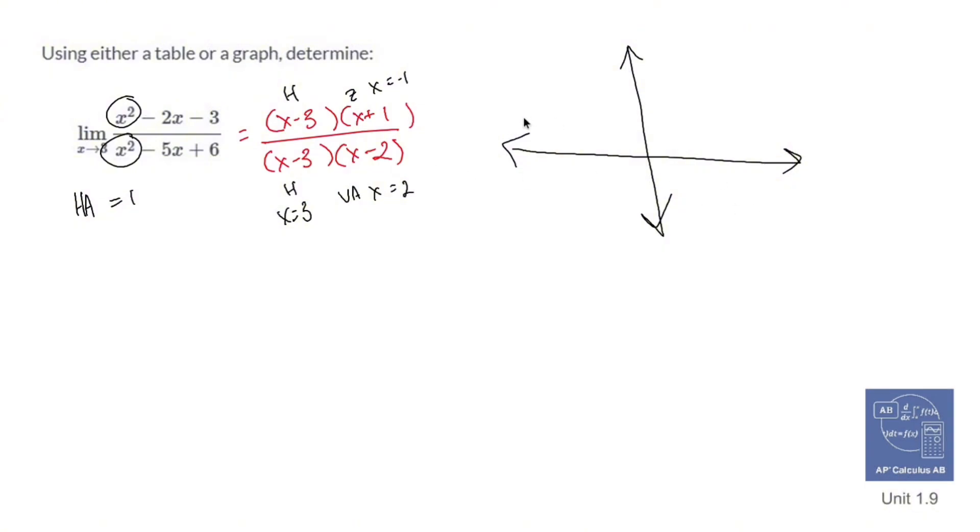So if the horizontal asymptote is 1, that means things are going to level out right here. This has a zero at negative 1, so I have a zero at negative 1. A vertical asymptote at 2, so we'll put a vertical asymptote here.